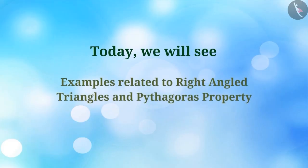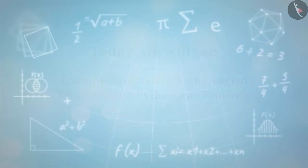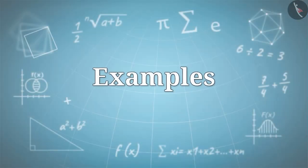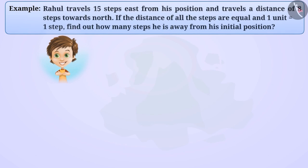Today, we will see examples related to right-angled triangles and Pythagoras property. Rahul travels 15 steps east from his position and travels a distance of 8 steps towards north. The distance of all the steps are equal and one unit is equal to one step. Find out how many steps he is away from his initial position.